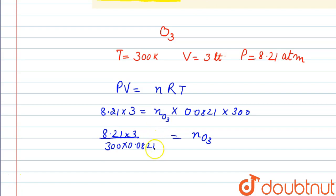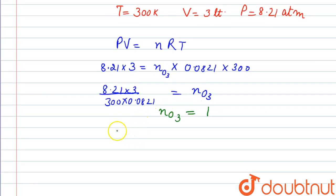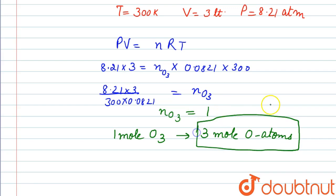So the number of moles of O3 will be 1. Now in one mole of O3, we have three mole oxygen atoms. So we have one mole of O3, which will have three mole of oxygen atoms. This is the answer.